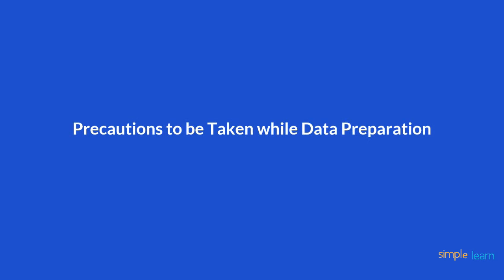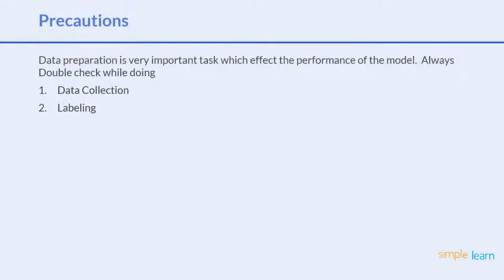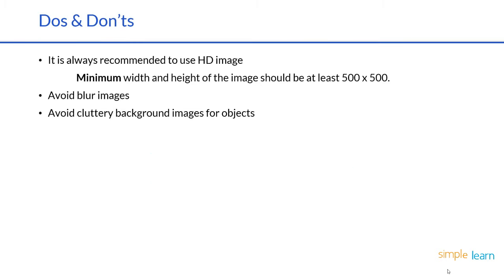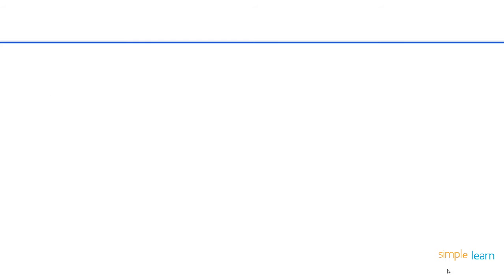Let's discuss precautions to take during data preparation. Data preparation is a very important task that directly affects model performance, so always double-check during data collection and labeling. There are three major rules for data collection: first, always use high-definition images — if HD is not available, ensure the height and width are at least 500 pixels. Second, always avoid blur images. Third, avoid images with cluttered backgrounds.